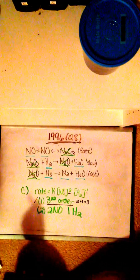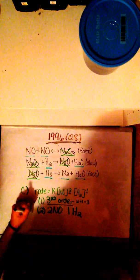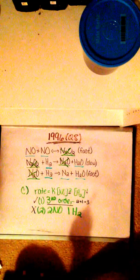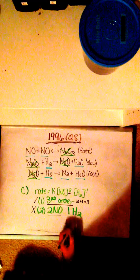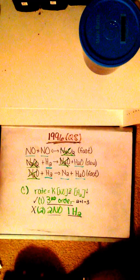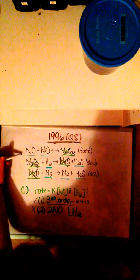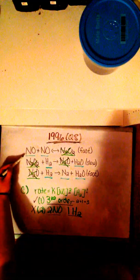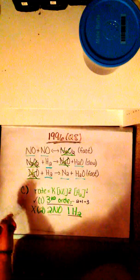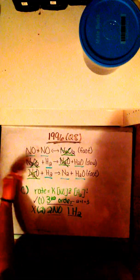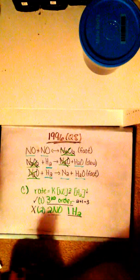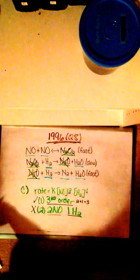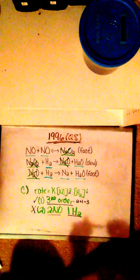Now let's move on to conclusion 2. Conclusion 2 is incorrect. Simply because 2 NO molecules and 1 H2 molecule are not present in any of these three processes. Step 1 has 2 NO molecules but no H2. And steps 2 and 3 have H2 but no NO. So conclusion 1 is correct and conclusion 2 is incorrect.